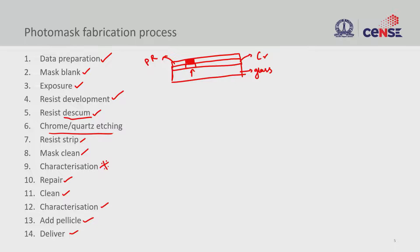In some cases, repair has not worked, or the characterization step shows the mask is completely out of specification. In that case, the process starts from the beginning — there is no way to rework the mask. This is why, if specifications are very tight — such as critical dimension variation within less than 1% or features very close to the resolution limit — the mask becomes very expensive, as the entire process may need to be repeated.